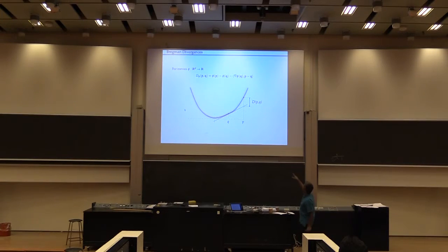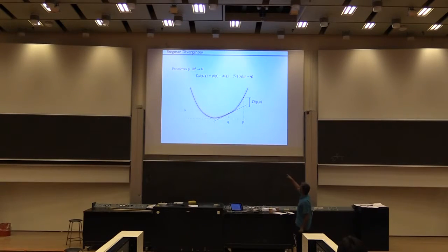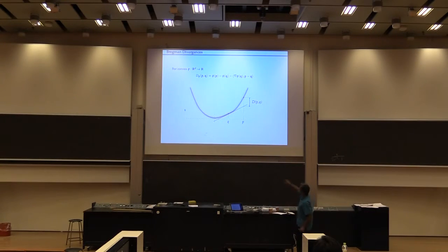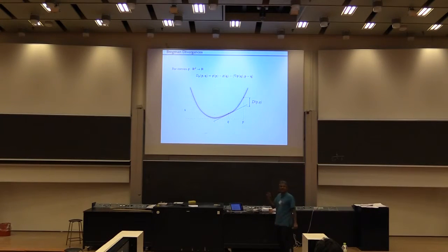Geometrically, what's happening is that you estimate the distance from P to Q — and this is directed. You look at the first-order approximation at Q: phi of Q plus the gradient term. That's a first-order approximation; since it's a convex function, it's always going to be below the true value. So there's going to be some difference, and that difference is your distance. It's a measure of a second-order term — essentially how convex this function is. For a linear function, this distance would always be zero.